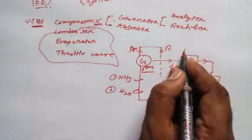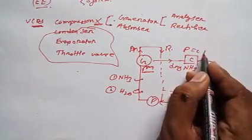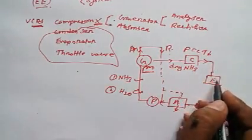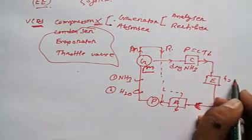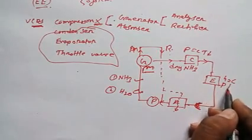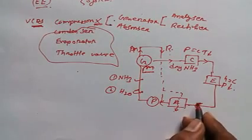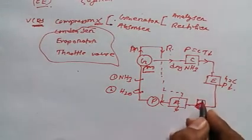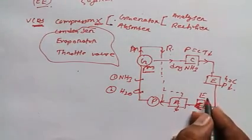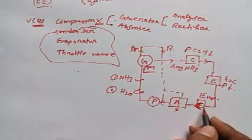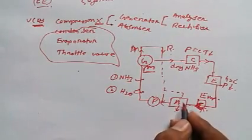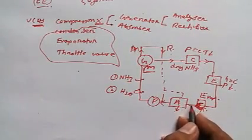The refrigerant goes to here, then here we'll have constant pressure, temperature will decrease. Then again, enthalpy would be constant and pressure would be decreased. Then here the absorber will absorb this.